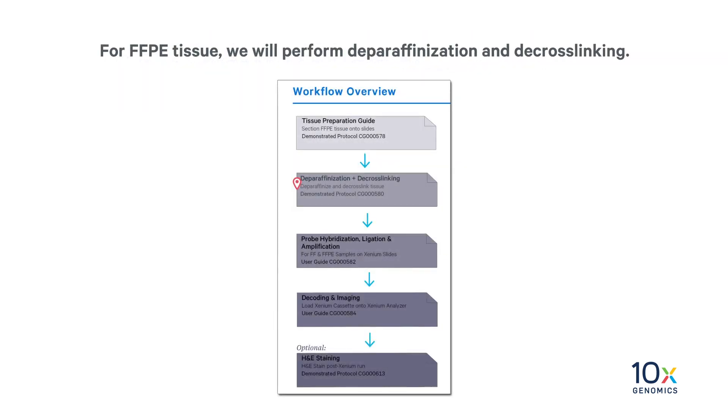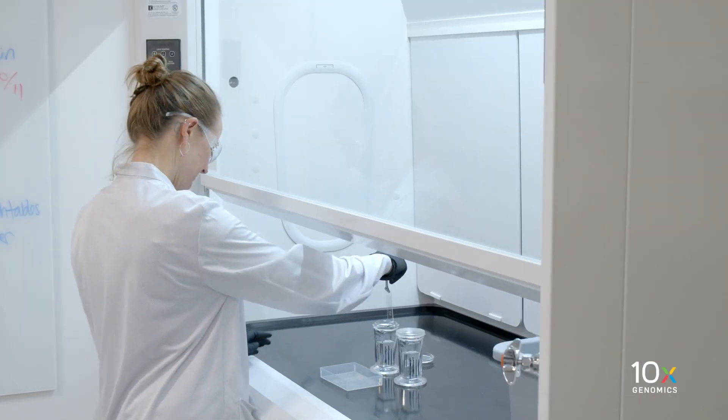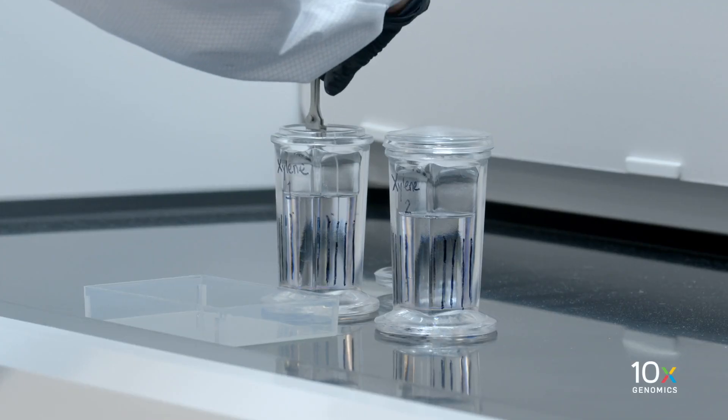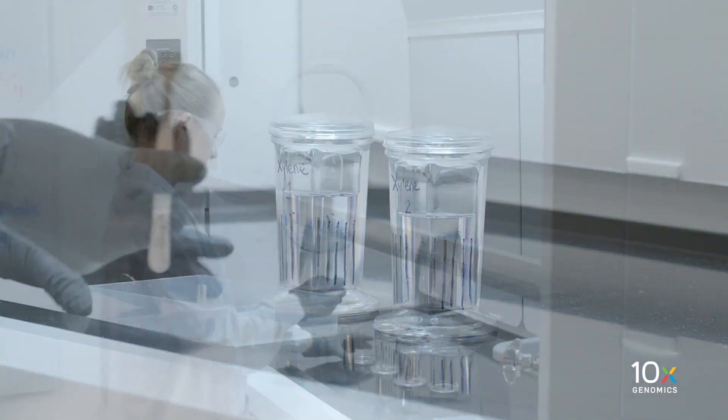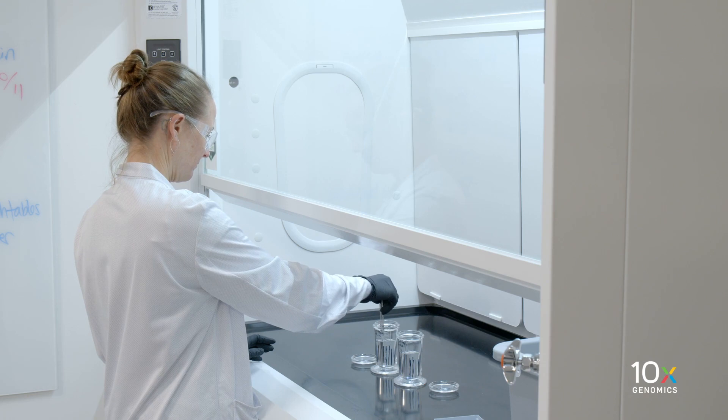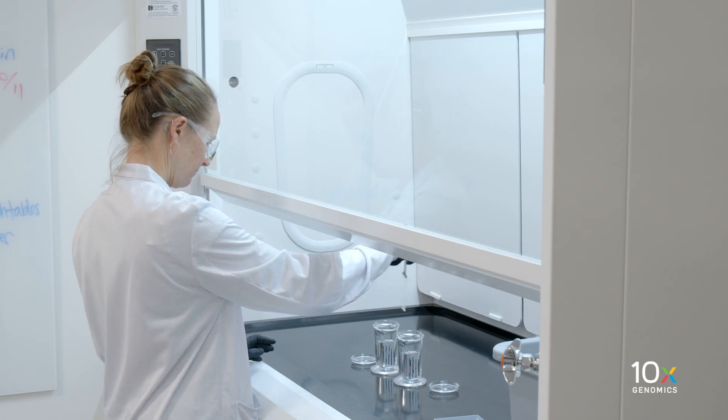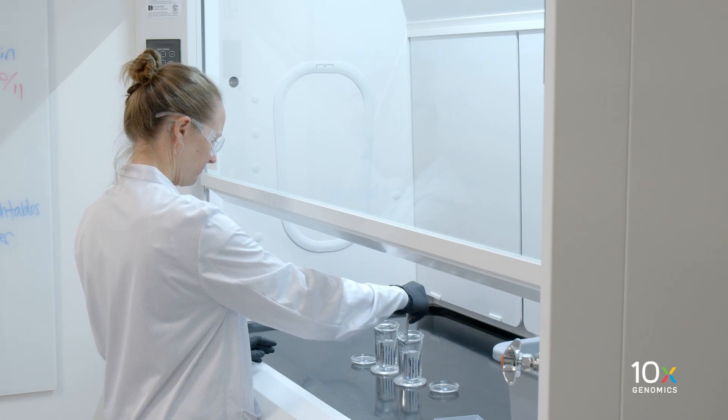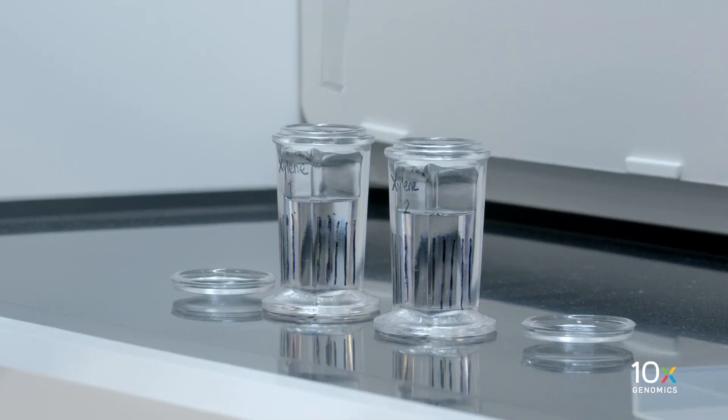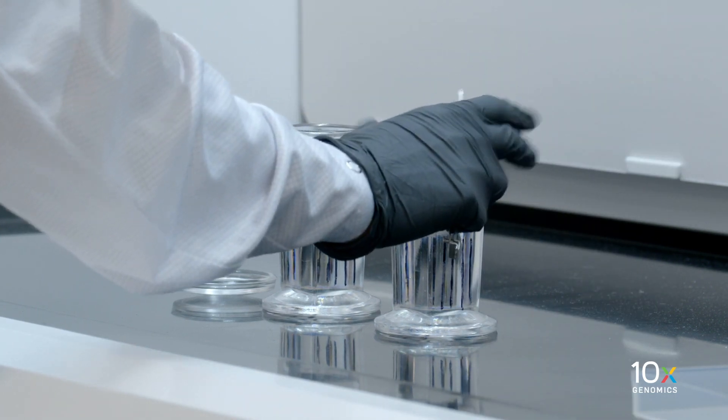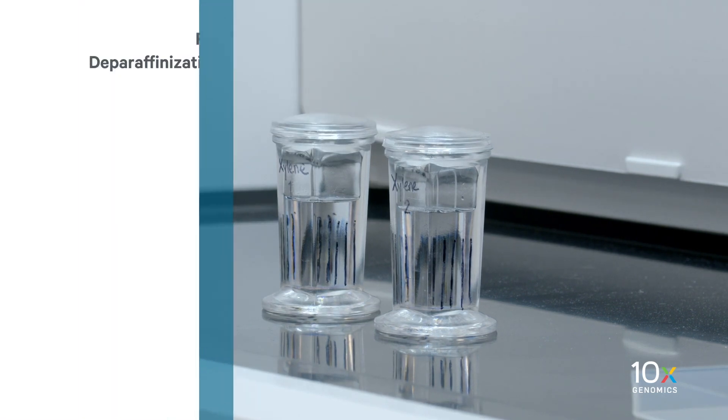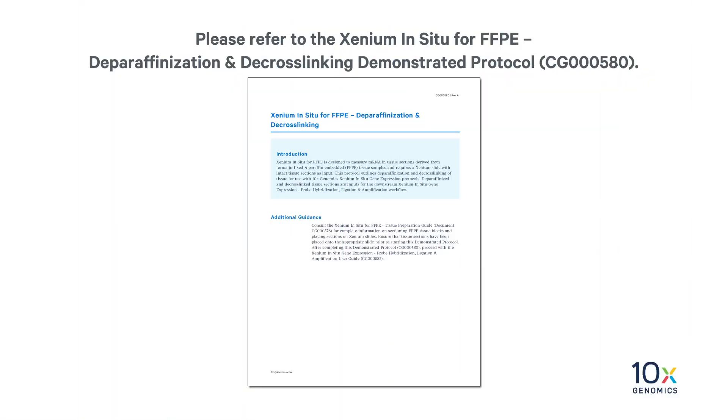For FFPE tissue, we will perform deparaffinization and decrosslinking. This is performed by immersing the slide in a series of coplin jars or staining dishes. Two coplin jars are shown here for illustrative purposes. Additional coplin jars are required. Please refer to the Xenium in situ for FFPE deparaffinization and decrosslinking demonstrated protocol.